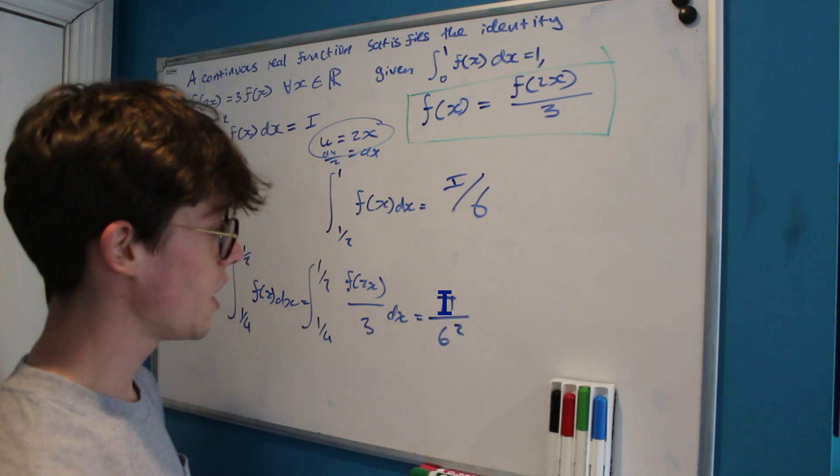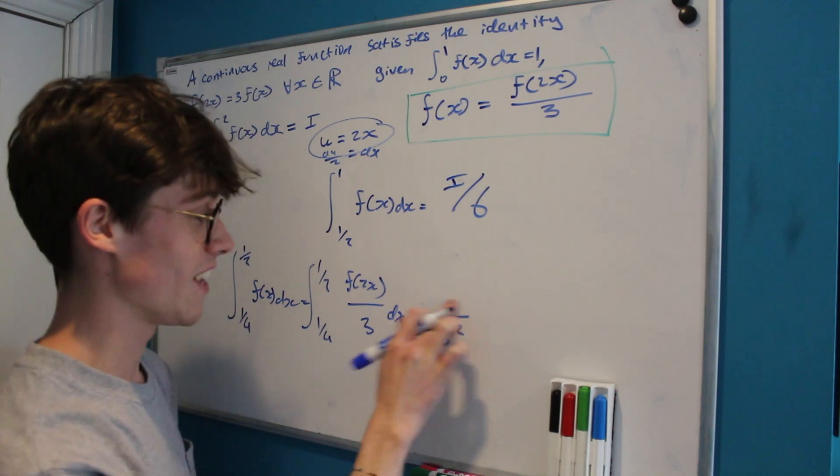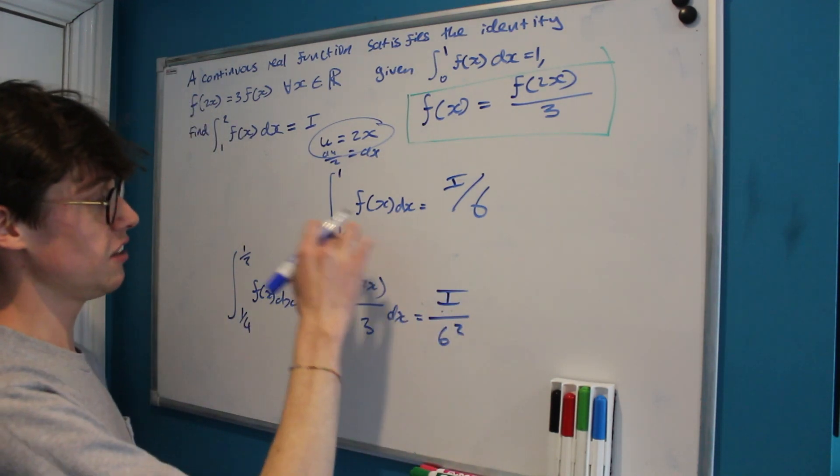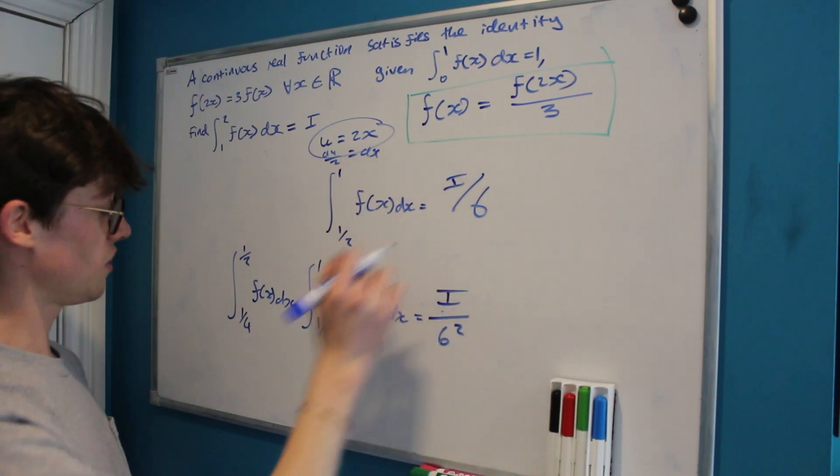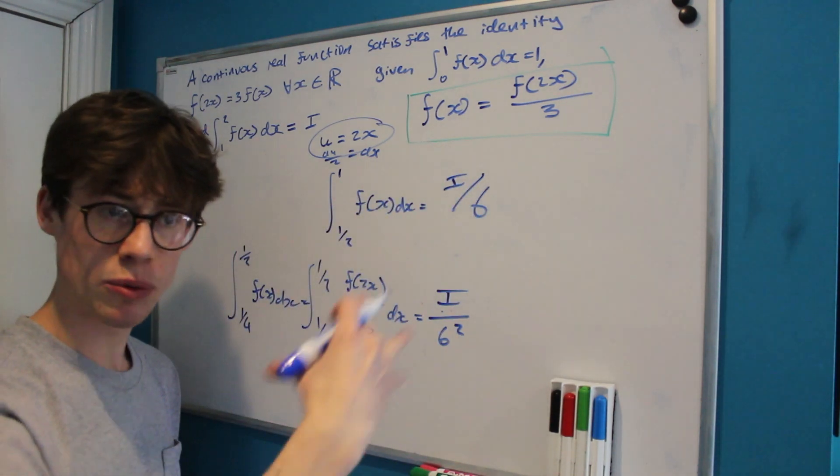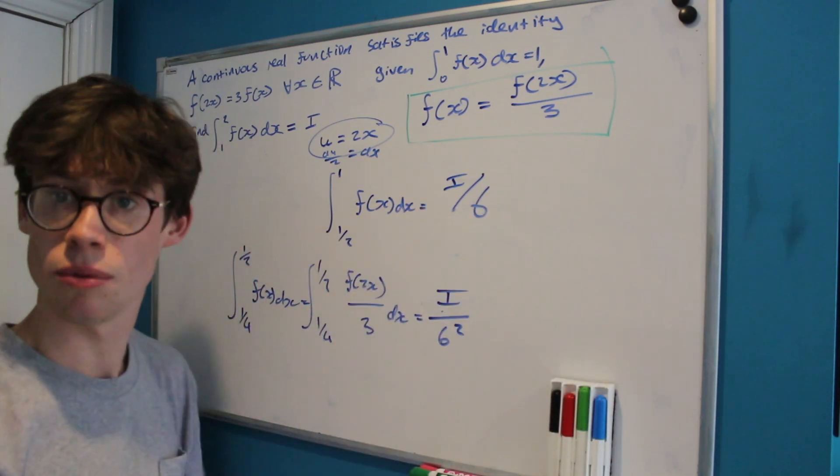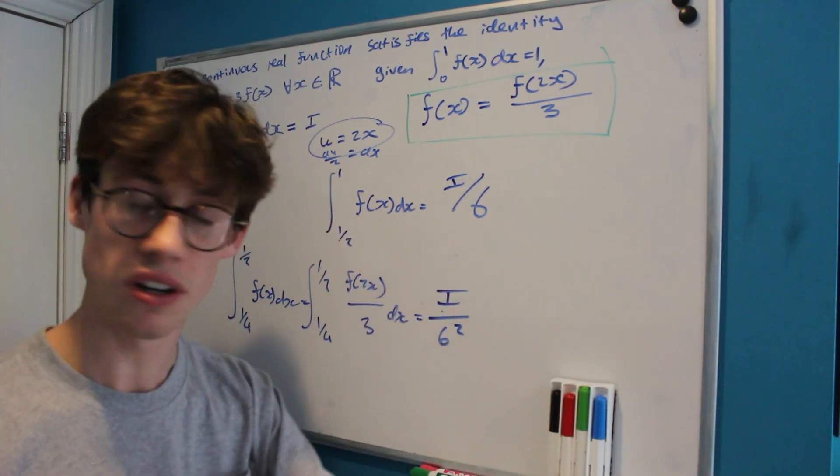And you may start to see the pattern that is emerging here. Sorry, I just noticed I wrote a pi instead of an i. The integral from a half to 1 is i over 6, the integral from a quarter to a half is i over 6 squared, and every time that we half our bounds we have to do this recursive step of multiplying by 1 over 6 one more time.